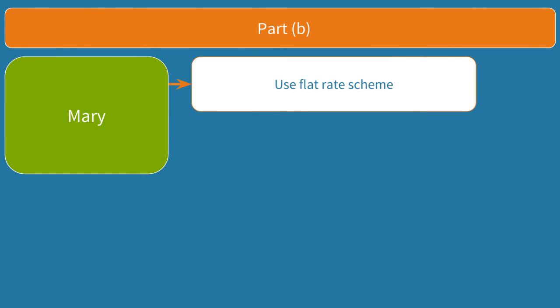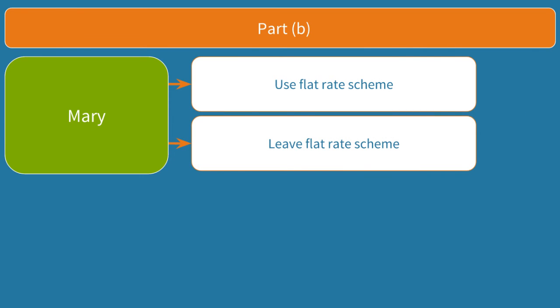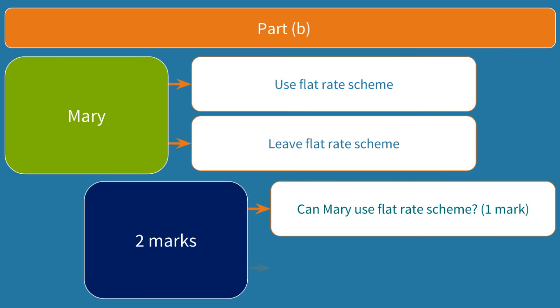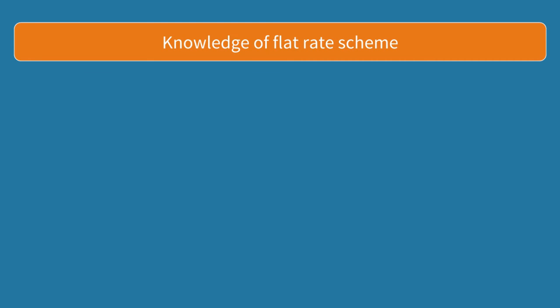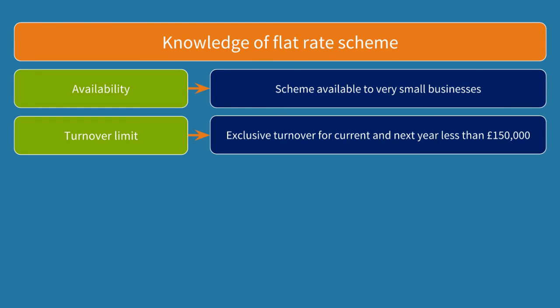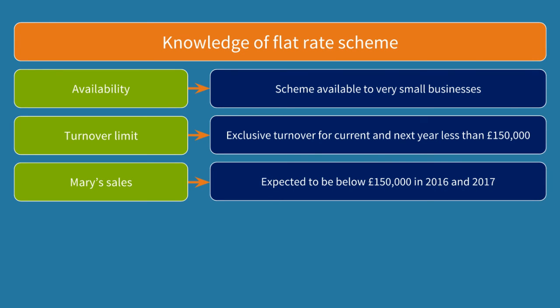So now we move on swiftly to part B. We need to explain whether Mary can use the flat rate scheme (FRS) and in which circumstances she would need to leave the scheme — worth 2 marks. The first mark is for explaining whether she can use the scheme. Remember the flat rate scheme is available to very small businesses. To join, your tax-exclusive taxable turnover must be below £150,000 per annum and you must expect this to be the case for the next year. Mary's sales are expected to be the same in 2017 as in 2016, so as this is below £150,000 she qualifies to join the scheme.